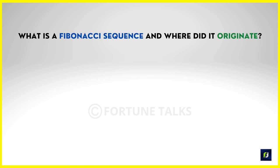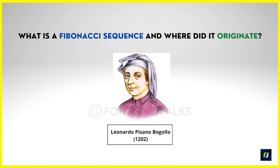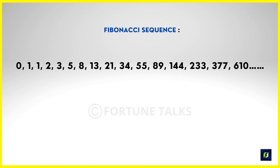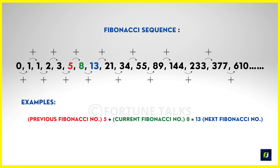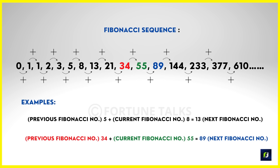What is a Fibonacci sequence and where did it originate? Leonardo Pisano Bugolo, an Italian mathematician from Pisa, is credited with the discovery of the Fibonacci sequence way back in 1202. The sequence goes: 0, 1, 1, 2, 3, 5, 8, 13, 21, 34, 55, 89, 144, 233 — and it goes on. Each number in the sequence is formed by adding the two consecutive numbers before it. For example, 5 plus 8 equals 13, and 34 plus 55 equals 89, and the sequence goes on to infinity.